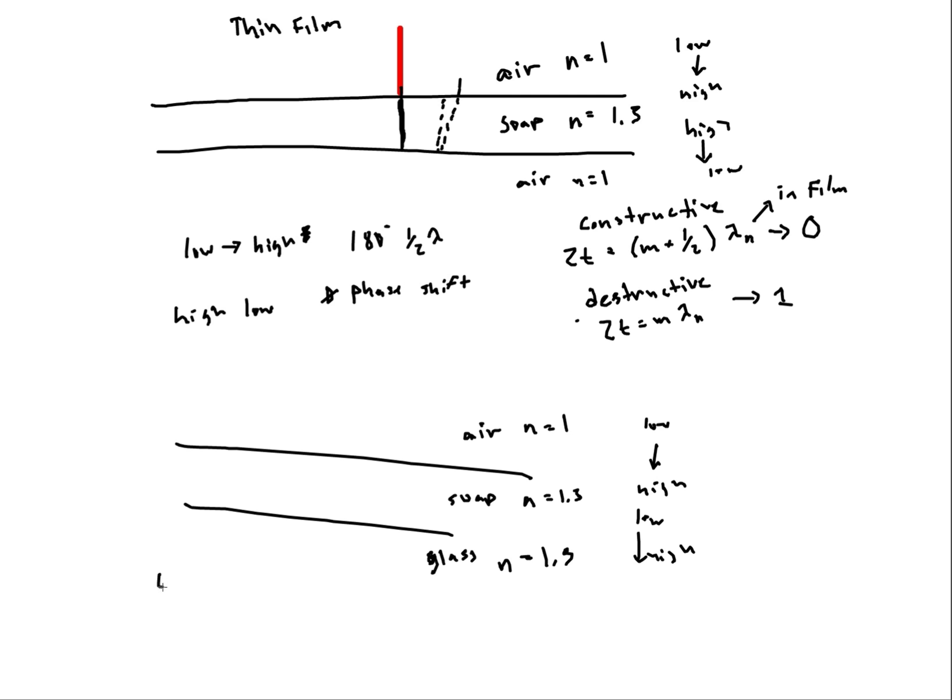Well for this type of problem you flip your equations. In other words, constructive interference occurs at 2T equals m times my wavelength in the film, and here you plug in 1. And for destructive interference you have 2T equals m plus one half times my wavelength, and again that's in the film. And here you can plug in 0. So you see how here we go low to high, low to high, you have 2T equals m lambda n, because you have a phase shift going on here and you also have another phase shift going on here. They both shift.